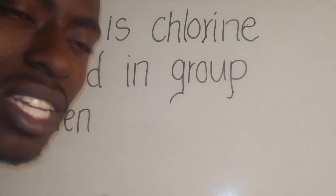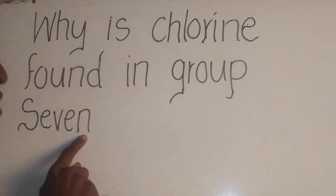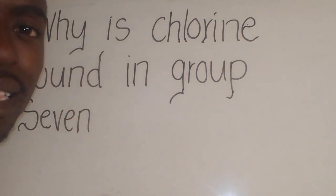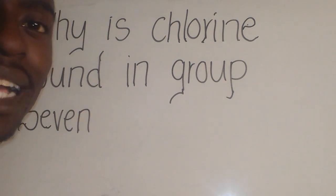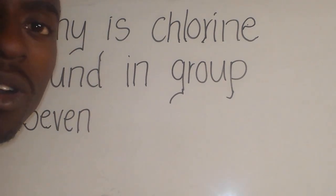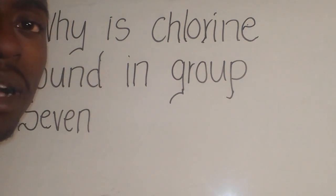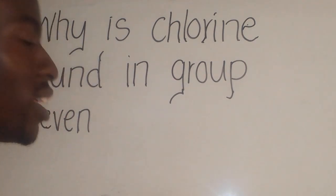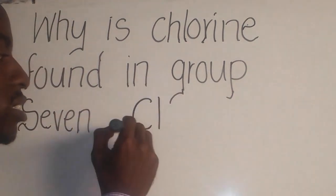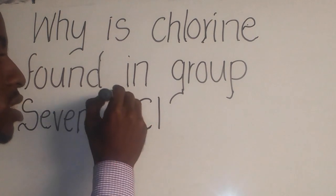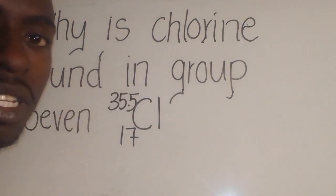I have a chemistry question: why is chlorine found in group 7? You need to understand that chlorine is a greenish-yellow gas, which has a symbol of Cl and the atomic number of 17, having a mass number of 35.5. This is the actual representation of chlorine.